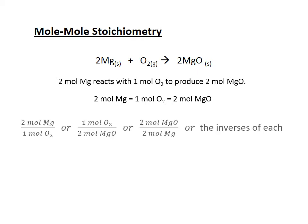Within this we have some implied conversion factors. We can write these as ratios and use them as factor label conversion factors. So the ratio of two moles of magnesium to one mole of oxygen, or flipping that around, one mole of oxygen to two moles of magnesium. Two moles of magnesium oxide correspond to two moles of magnesium. All these can be used as written or flipped upside down.